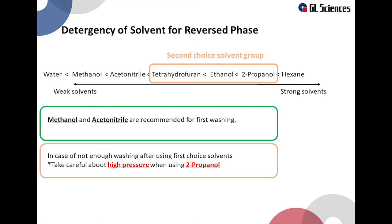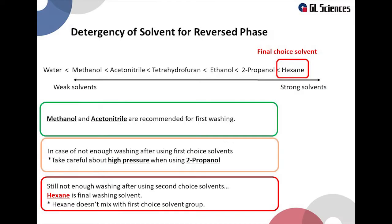However, make sure to increase the pressure when using isopropanol. If the cleaning is also insufficient with the second choice solvent group, use hexane as the final choice solvent. However, hexane does not mix with the first choice solvent group. Therefore, make sure to use hexane after applying the second solvent group. We will explain the washing method on the following slides.